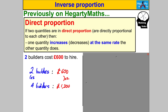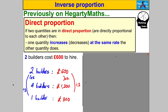What if I said: how much would one builder cost? Well, if two builders cost 600 pounds, one builder would cost less. I'd have to divide that by two, and similarly divide the price by two. So one builder would therefore only cost 300 pounds. That is a typical example of quantities — your number of builders — being directly proportional to another quantity, the price to hire them.